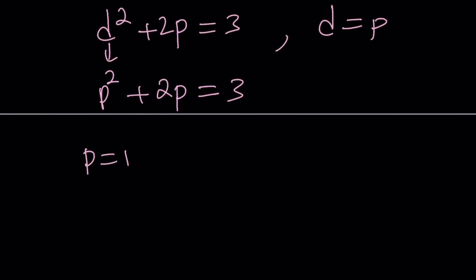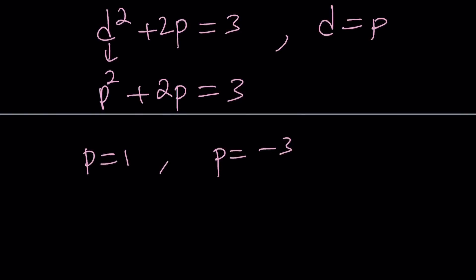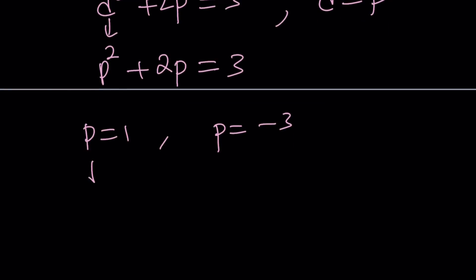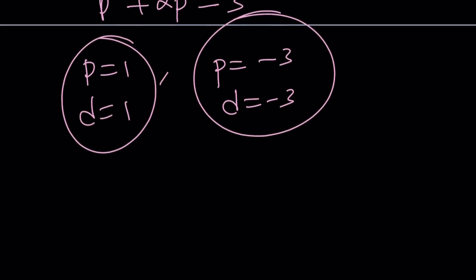And from here we get two solutions: p equals 1 and p equals negative 3. And since d and p are equal, if p equals 1 then d equals 1. If p equals negative 3 then d equals negative 3. This is not the end of it because we still have to find x and y from here, but that's going to be fairly easy.